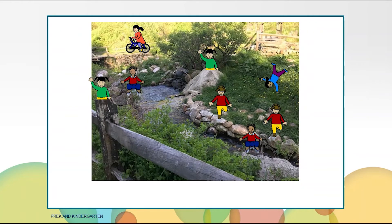There were eight children playing at Stony Brook. They decided to play hide-and-seek. Some of them are hiding behind the bushes and only four children are left at the brook. How many children are hiding in the bushes?